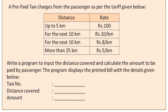For the next 10 km it is Rs. 10 per km. That means if you travel from 6 to 15 km, you have to subtract the first 5 km and then multiply the remaining km by Rs. 10. The first 5 km charge of Rs. 100 should be added to that result.